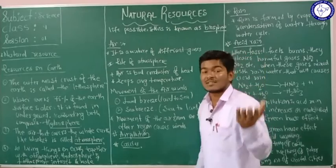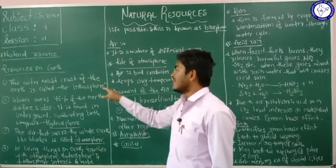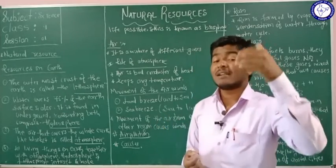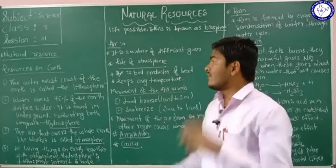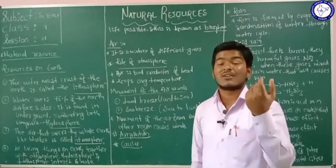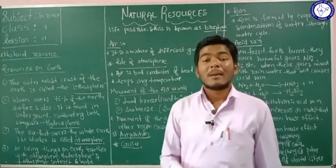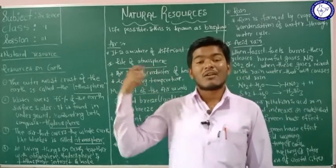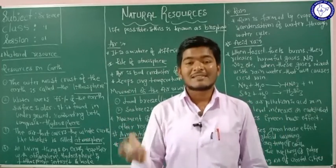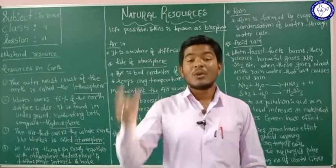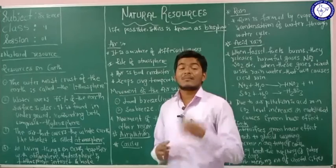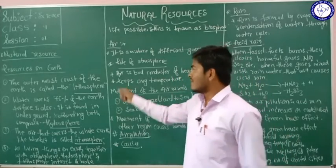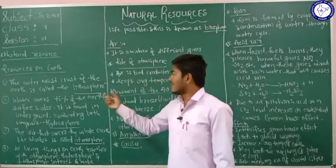On the earth's surface, we get natural resources from four different spheres or layers. The first sphere is the outermost crust of the earth, called the lithosphere. From the lithosphere, we can get plenty of materials and minerals such as gold, iron, and silver. All the metals and non-metals present in the earth's crust are found in minerals, and we get ores from these minerals.